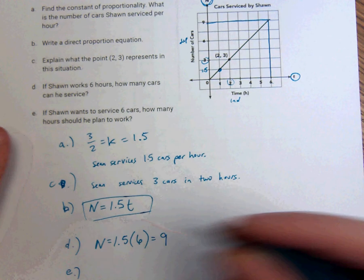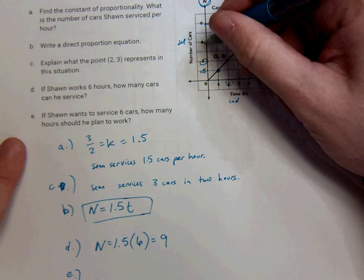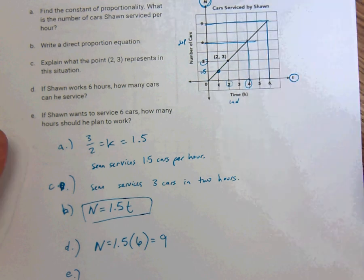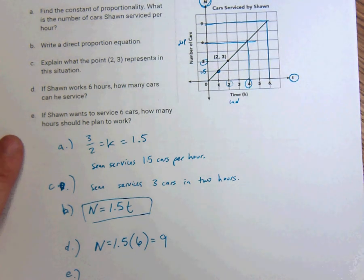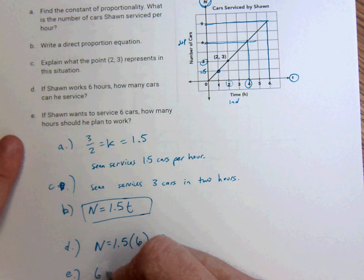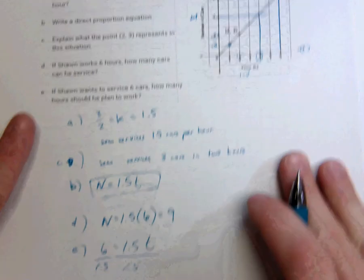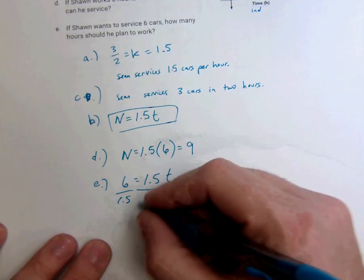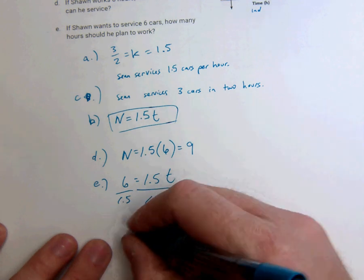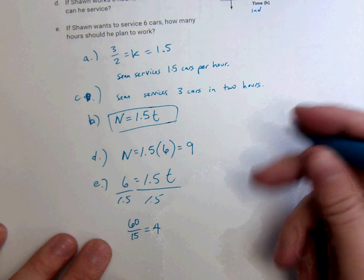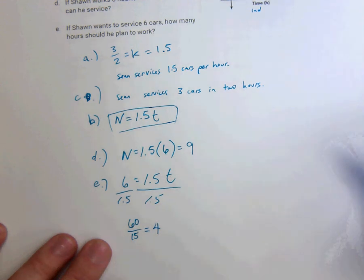E, Sean wants to service six cars. Well, six cars. Go over, go down. It takes four hours to do. We can also prove that by saying, okay, he's working six. It was 1.5 T. Divide by 1.5. Divide by 1.5. Six over 1.5 is like 60 over 15, which is equal to four. So, it would take him four hours to service six cars.